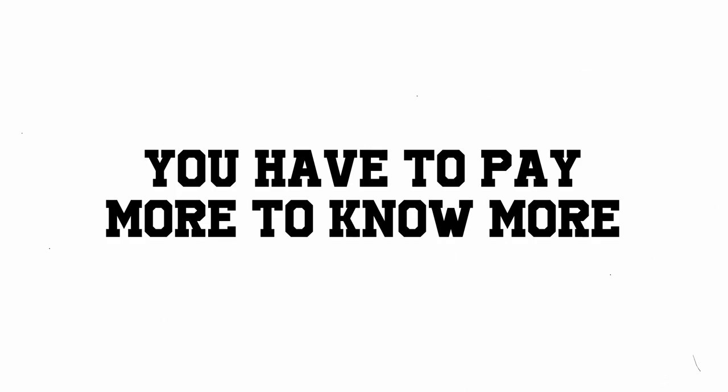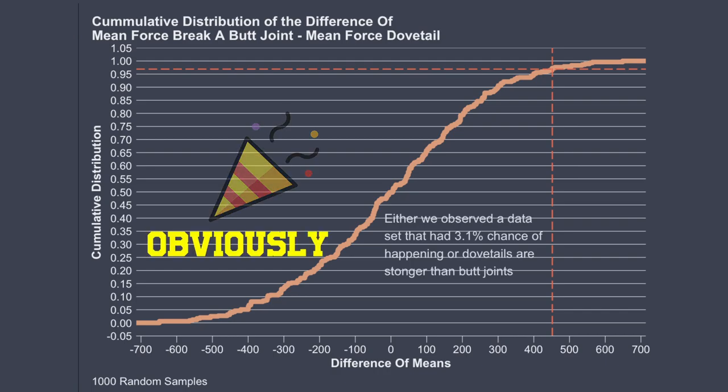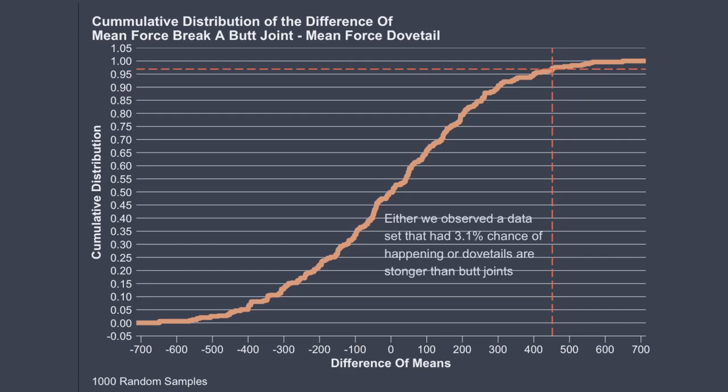When you want knowledge about something very detailed — like whether one joint is just 1% stronger than another — you need a much larger sample size. But when things are fairly obvious and most people would agree they're different even without statistics, you don't need a large sample size. We can test whatever we want with this data. We found a p-value of 0.031 for dovetail versus butt joint — to me, that is more than enough evidence to say the skeptic does not have enough ground to stand on. Dovetails are stronger than butt joints. Permutation tests are better for people new to statistics because they involve much less formula memorization.